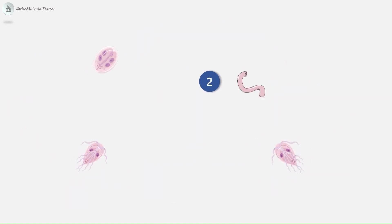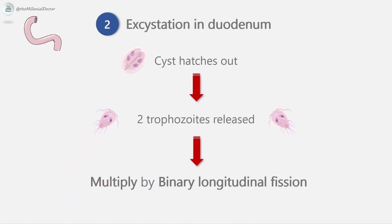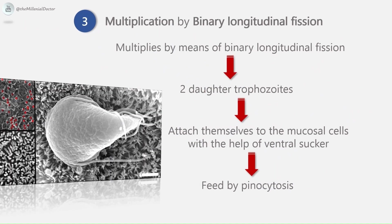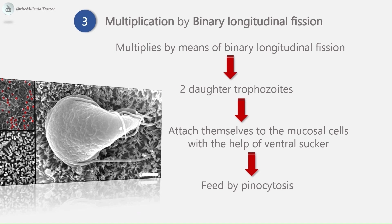During excystation in the duodenum, the trophozoite is motile with a slow oscillation comparable to a falling leaf. Within half an hour of ingestion, the cyst hatches out into two trophozoites, which multiply successively by binary fission and colonize the duodenum. The trophozoites live in the duodenum and upper part of the jejunum and feed by pinocytosis. They attach themselves to the mucosal epithelium of the villi with the help of the ventral sucker.